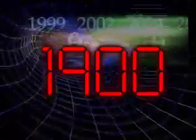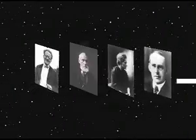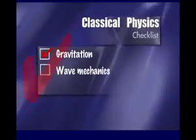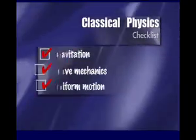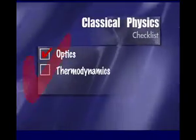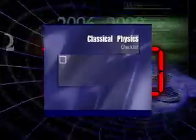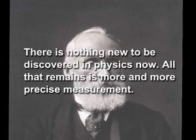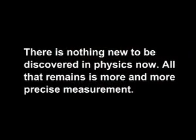At the start of the 20th century, many physicists might have thought they'd soon be out of a job. It was believed that the laws of physics were complete. At the 1900 British Association for the Advancement of Science, the engineer and physicist Lord Kelvin said, 'There is nothing new to be discovered in physics now. All that remains is more and more precise measurement.' But nothing could be further from the truth.